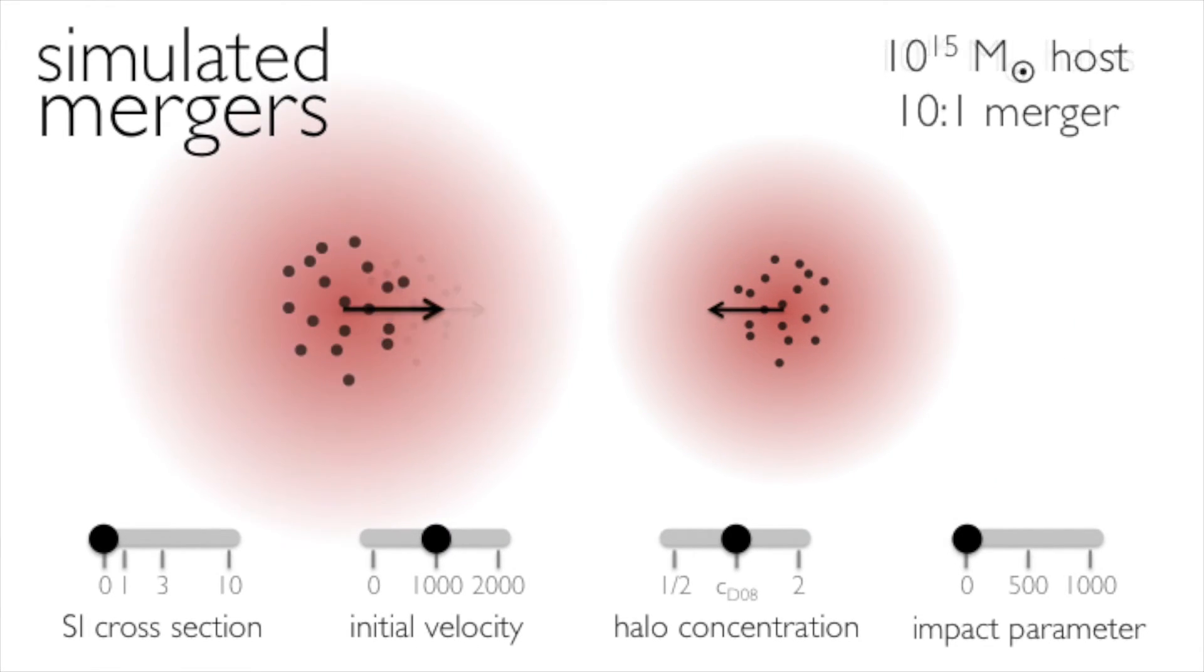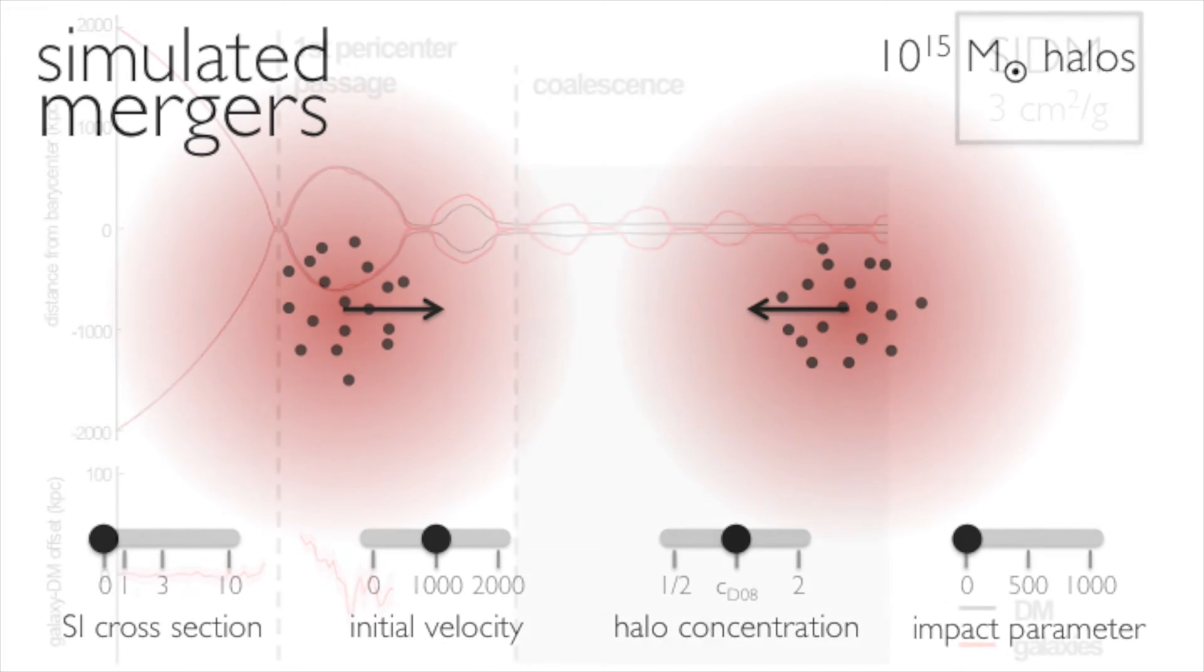We find that although the size of offsets depends most strongly on the self-interaction cross-section, they can change dramatically under different merger conditions.